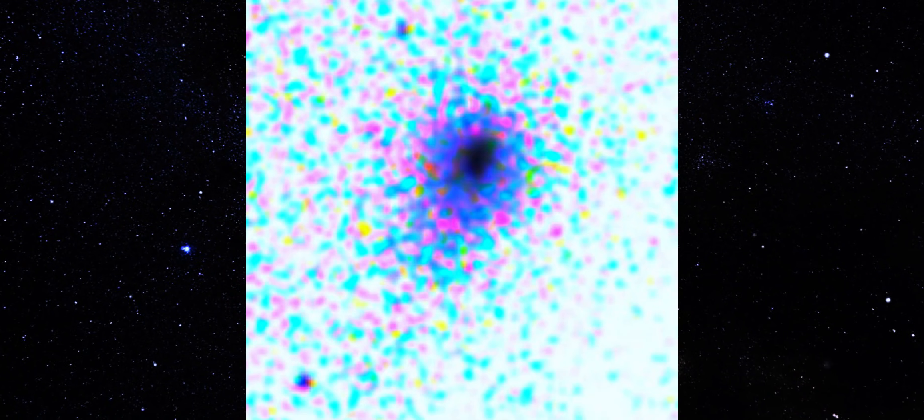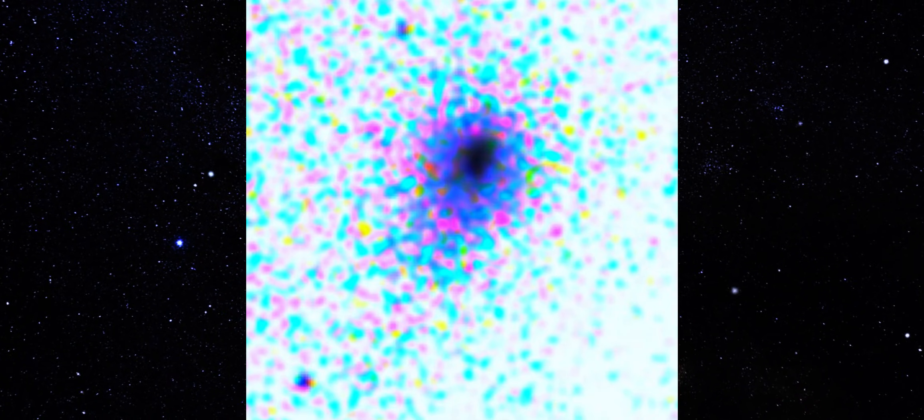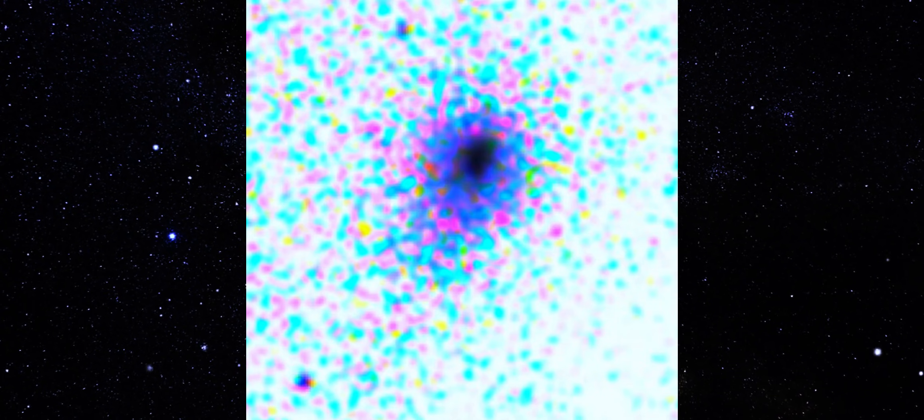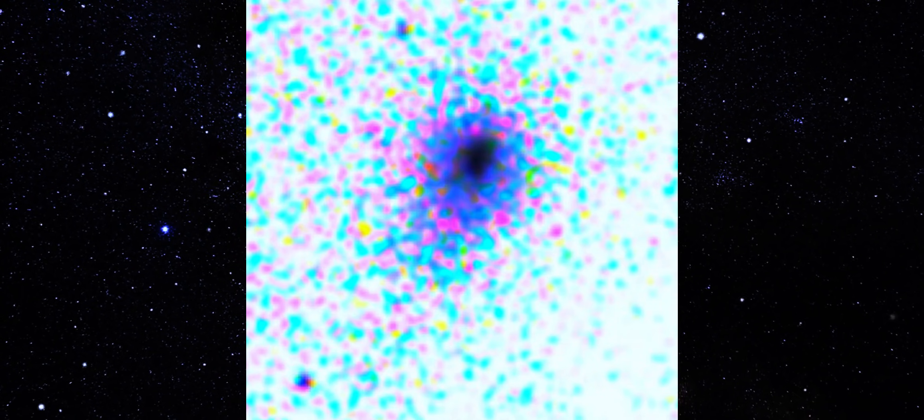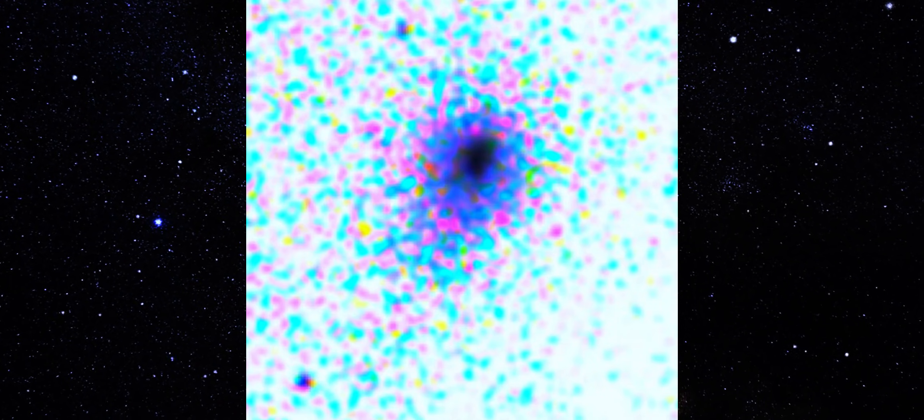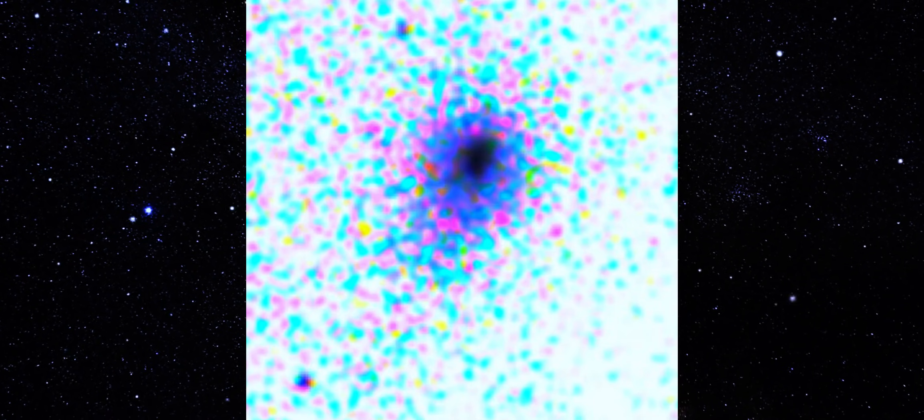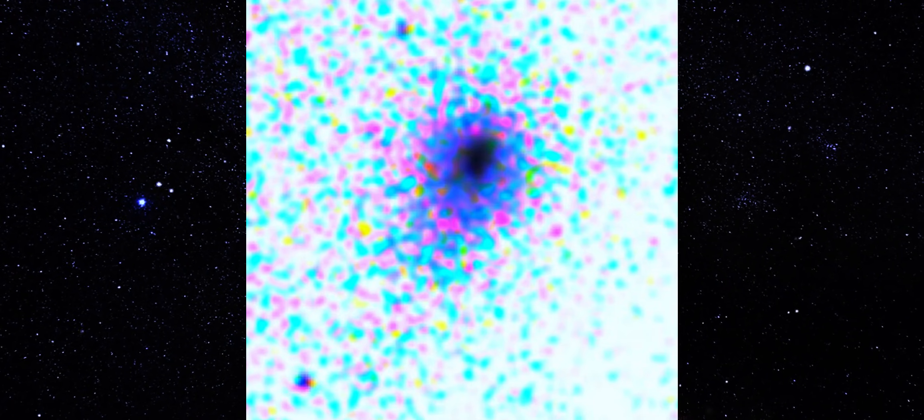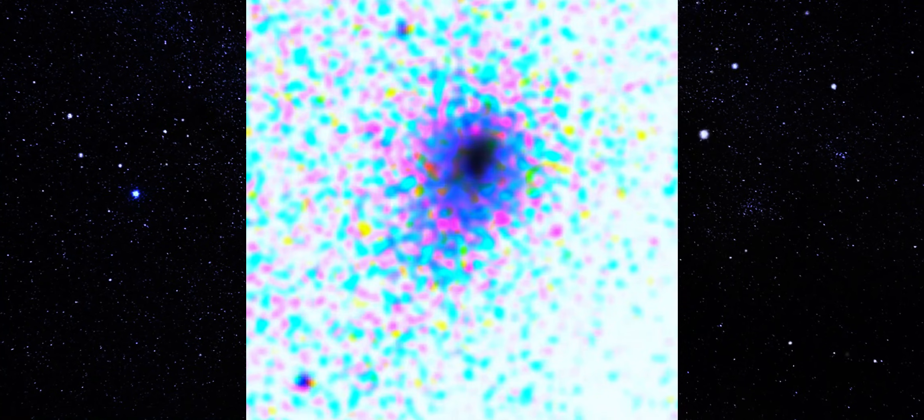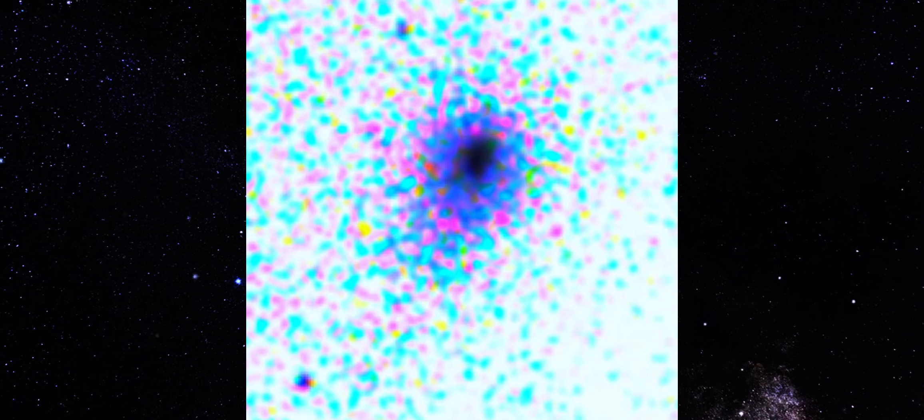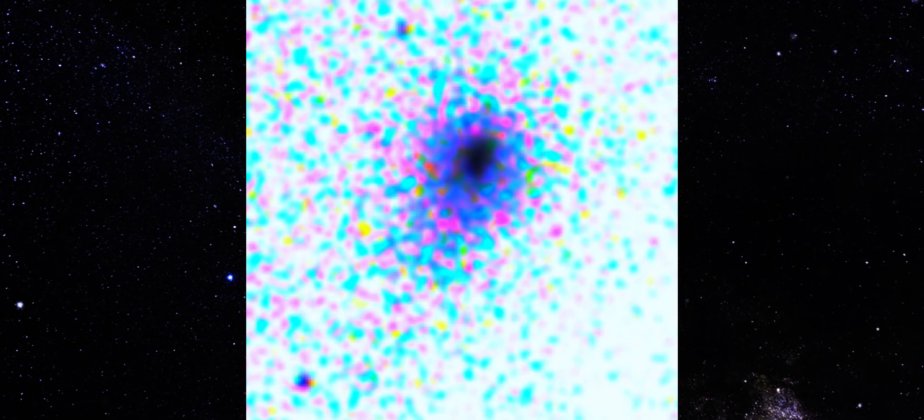This is the same frame again, but inverted and pushed to reveal what normally hides in the background. No smoothing, no cosmetic cleanup. And now the geometry locks in. The core stays tight, but the extension doesn't dissolve into grain. It sharpens. Noise breaks apart when inverted. Real structure survives. This survives.